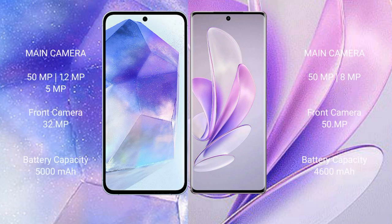Samsung Galaxy A55 features a triple rear camera setup: 50MP plus 12MP plus 5MP, and a 32MP front camera. Vivo A17 features a dual rear camera setup: 50MP plus 8MP, and a 50MP front camera.